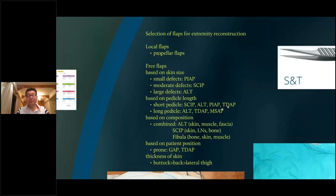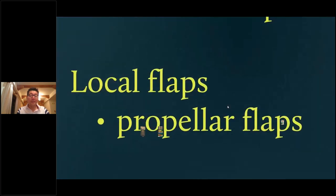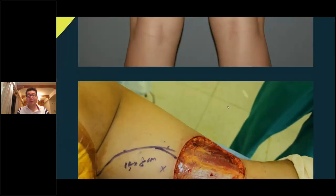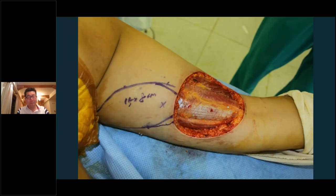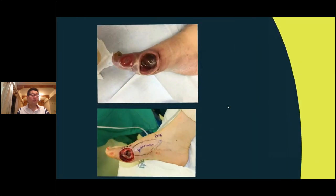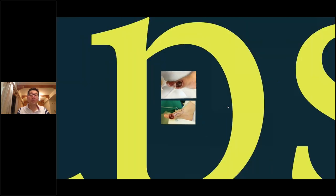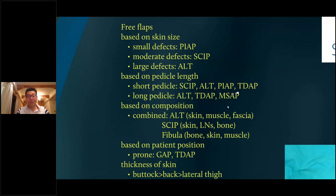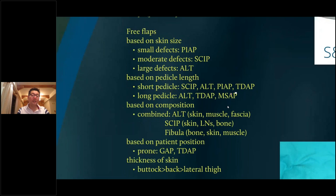Using perforators as recipient vessels and using perforator flaps has really changed a lot of my thinking in selection of flaps in the lower extremity. In the thigh, you basically never need free flaps — there's abundant tissue and you can quickly elevate a flap based on a single perforator, rotate it, and reconstruct without free flaps. Even for the feet, sometimes a quick propeller flap after complete debridement gives a pretty good result. Most of the thigh is about propeller or keystone flaps, but for the lower leg, it's based on patient position, pedicle length, skin size, composition, and thickness.